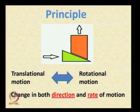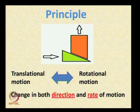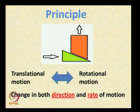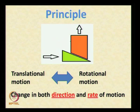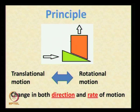If the green wedge moves right, then the upper block goes up. This is the principle behind the screw. A screw changes translatory motion into rotational motion and vice versa. It also changes both the direction and rate of motion.